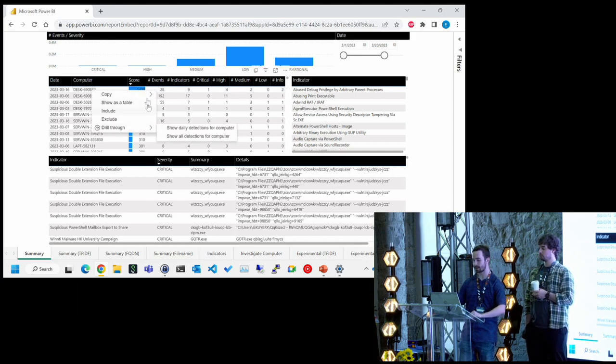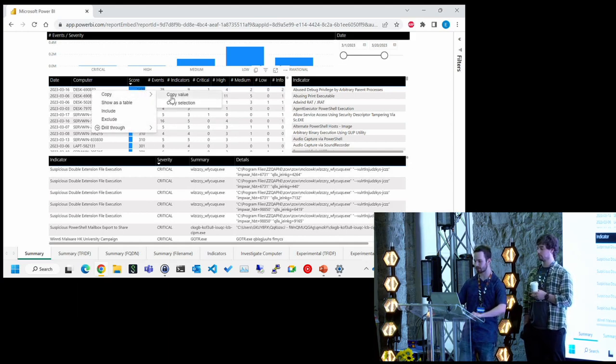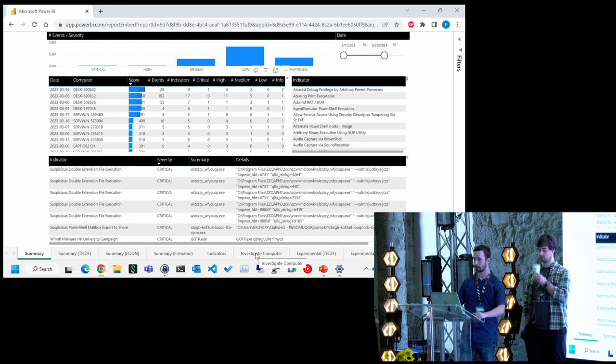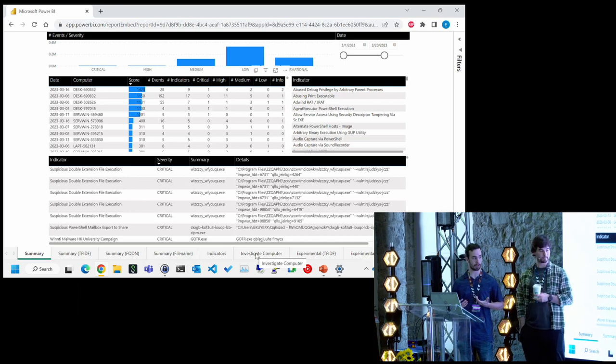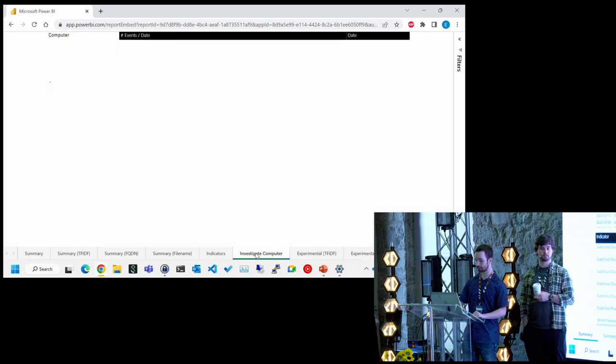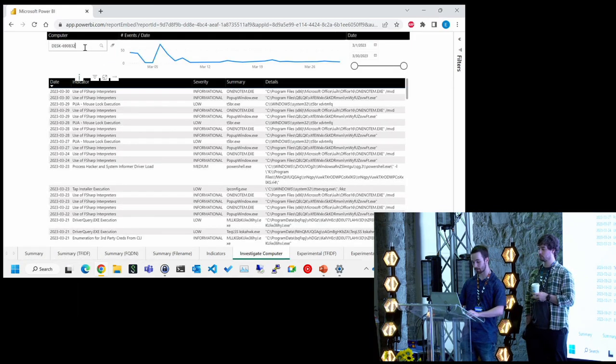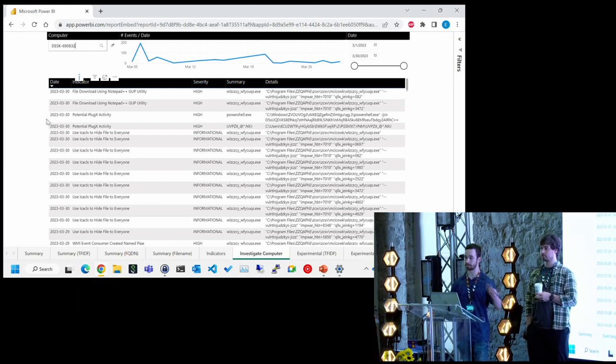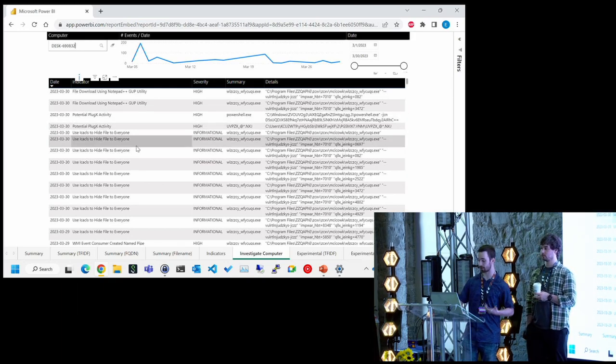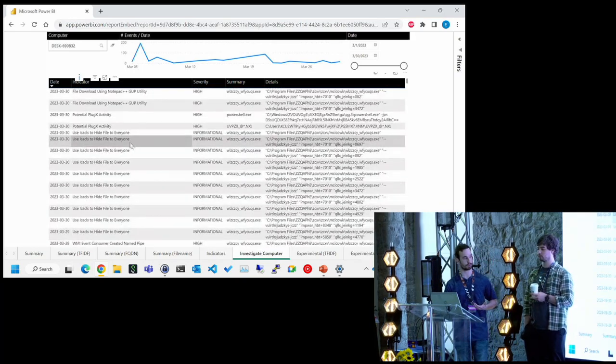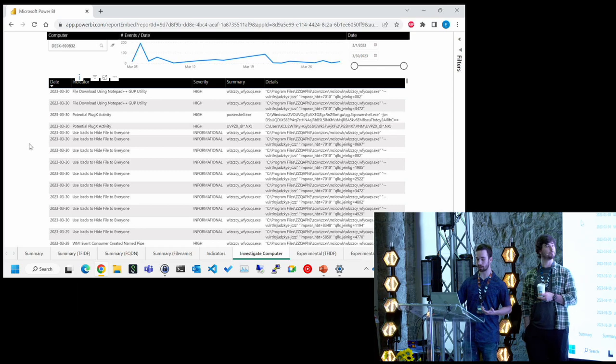It's not only for threat hunting. As we said, we can use them to pivot from an ongoing investigation. So let's say there's an EDR alert that gets triggered. The analyst that looks at the alert, they want to see what kind of indicators have triggered. So we have a page for that where you can input a machine and see basically the same stuff that we've seen while threat hunting.